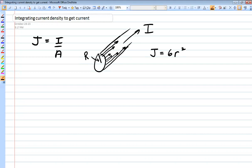So this cross-section, it's a parabolic increase in current density as you move towards the edges of the wire. So if we want to know the total current, we solve for I.